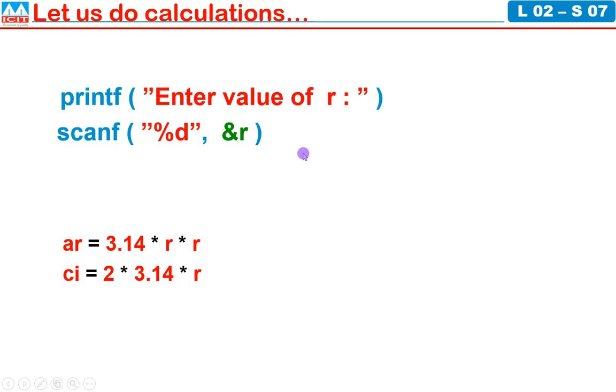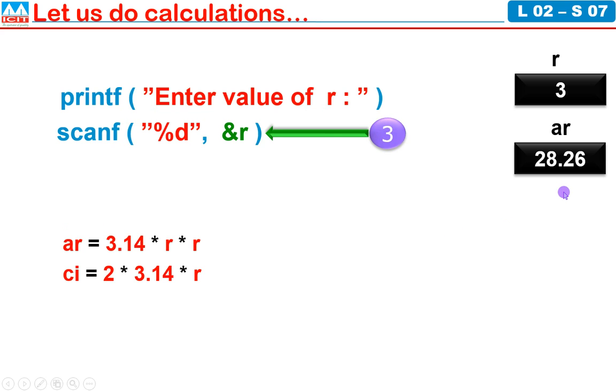If you do this, at the time of execution of this program, Enter value of r message appears. Then you type 3 and the value will be received by scanf statement and stored in variable R. So R value is 3. Next, ar equal to 3.14 into 3 into 3 gives 28.26. That will be stored in ar variable. Next, 2 into 3.14 into 3 gives 18.84. That will be stored in variable ci. Okay, we performed calculation.